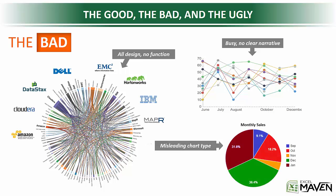And then third, a good example of a misleading chart type. We're looking at monthly sales from September through January. Technically this is valid because the percentages do add up to 100%. The problem is when you're trying to show relative volume or trending over time, there are other charts that communicate that much more effectively, like column charts or line charts.